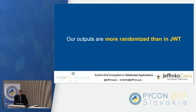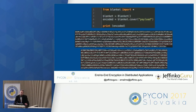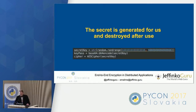The benefits: our outputs are more randomized than JSON web tokens. As you can see, this is the exact same payload run two times and the message is completely different. The only way you would know you're using Blanket is by the first three digits. Anyone monitoring your traffic would not necessarily know what kind of encryption you're actually using. No matter how many times you run this code, the message will always be different because the separator is random, your password is random, everything is random — you don't even know your own keys or password. The secret is generated and destroyed after use.